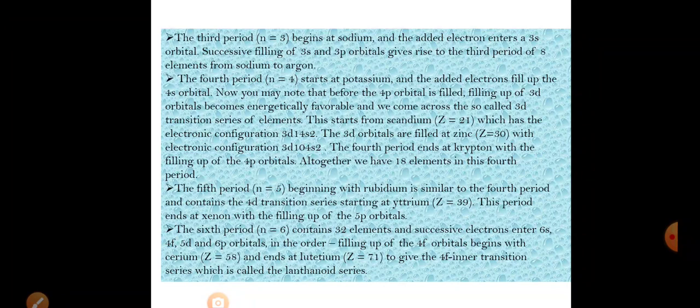The fifth period also has 18 elements, beginning with rubidium, similar to the fourth period. The sixth period has n=6 and contains 32 elements. Successive electrons enter the 6s, 4f, 5d, and 6p orbitals. The filling of the 4f orbital begins with cerium.